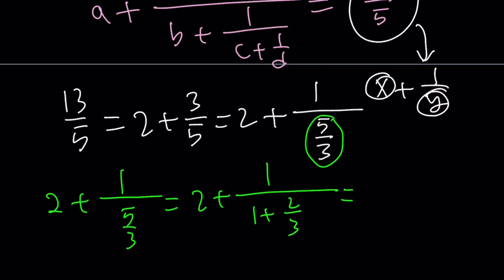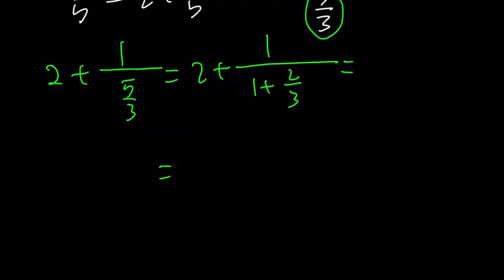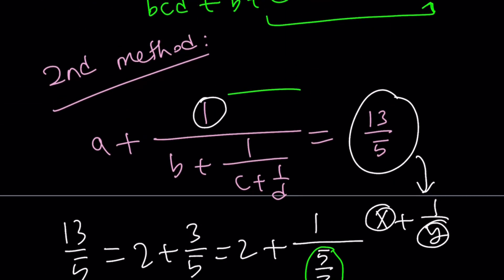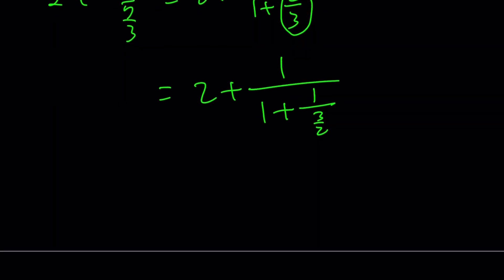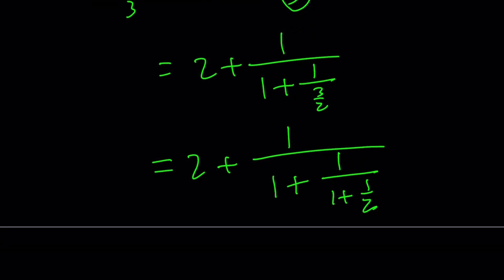2 plus 1 over 5 thirds can be written as 2 plus 1 over... Now 5 thirds is 1 plus 2 thirds. We're going to write this as 2 plus 1 over 1 plus 1 over 3 halves. I'm going to manipulate the 2 thirds and write it as 1 over 3 halves. The point is I want my expression to look like this with that many fraction bars. I have 1, 2, and 3 fraction bars. But 3 halves can be written as 1 plus 1 half. And I got the same structure.